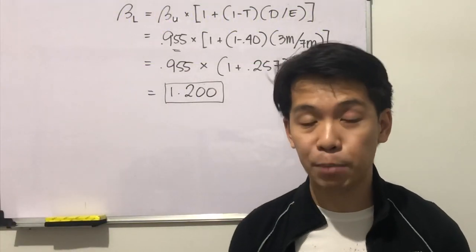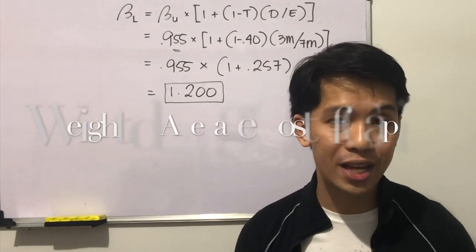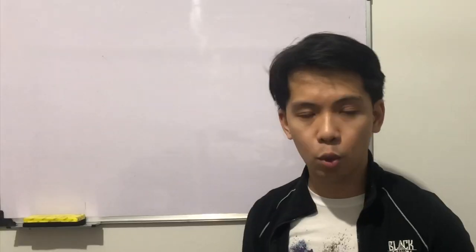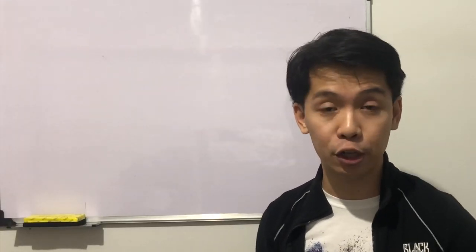Aside from the capital asset pricing model, we should also be aware of the weighted average cost of capital formula. WACC equals R sub D times (1 minus T) times W sub D, plus R sub S times W sub E. Where T is the income tax rate, R sub D is the required rate of return on debt, W sub D is the percent weight of funds from debt, R sub S is the required rate of return on common stock, and W sub E is the percent weight of funds from equity.